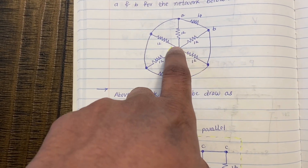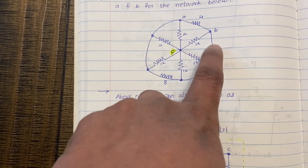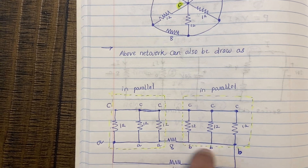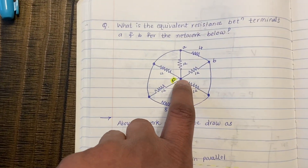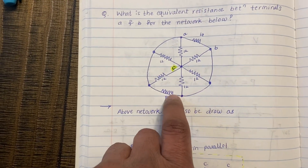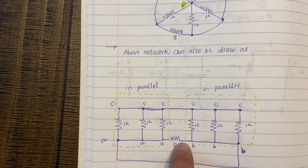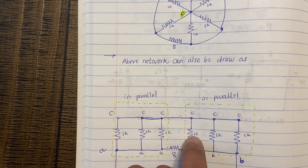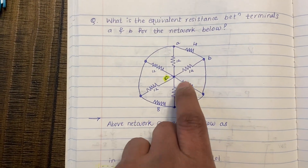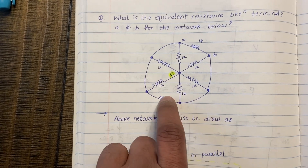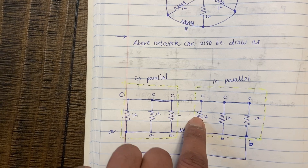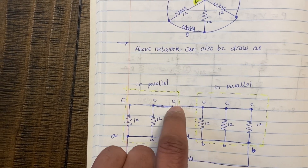Continuing, from C to B there is again 12Ω, and again another 12Ω. So we have three 12Ω resistances — resistance one, resistance two, and resistance three — all connected between C and B. Then we have the 8Ω resistance, where C is at the top and B is at the bottom.